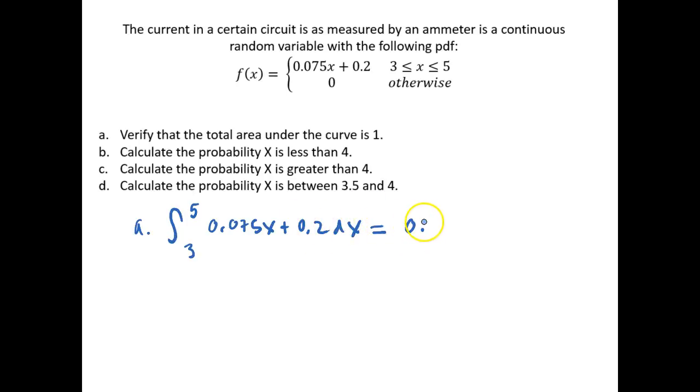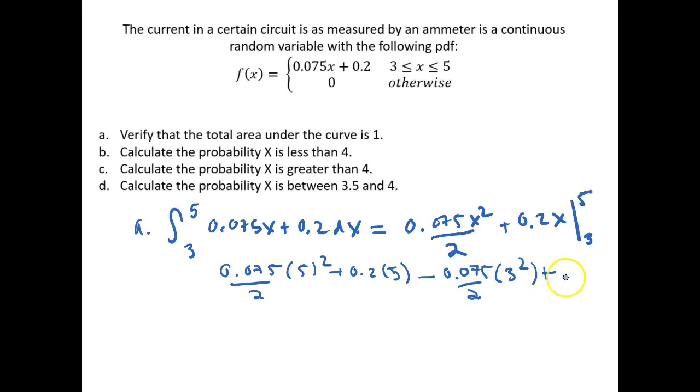And so if we integrate this function, this is 0.075x squared over 2 plus 0.2x and if we take the expression from 3 to 5, we'll find we get 0.075 over 2 times 5 squared plus 0.2 times 5 minus 0.075 over 2, 3 squared plus 0.2 times 3.